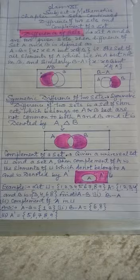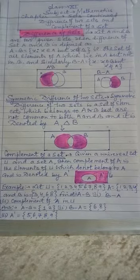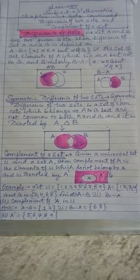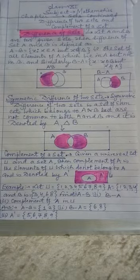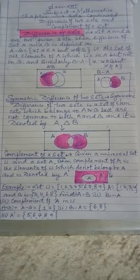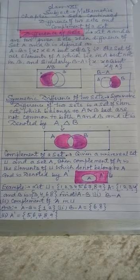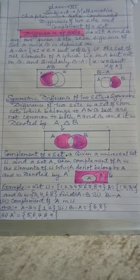And then A complement, A dash, is {5, 6, 7, 8, 9}, the elements of U which are not in A. That makes it clear. Make a note of it. These are some more definitions which have to be used later on. Make a note of it and show it to me. Everybody has to show.